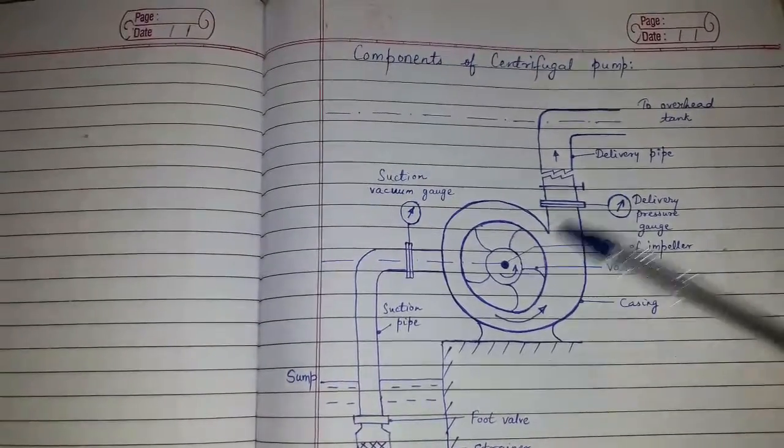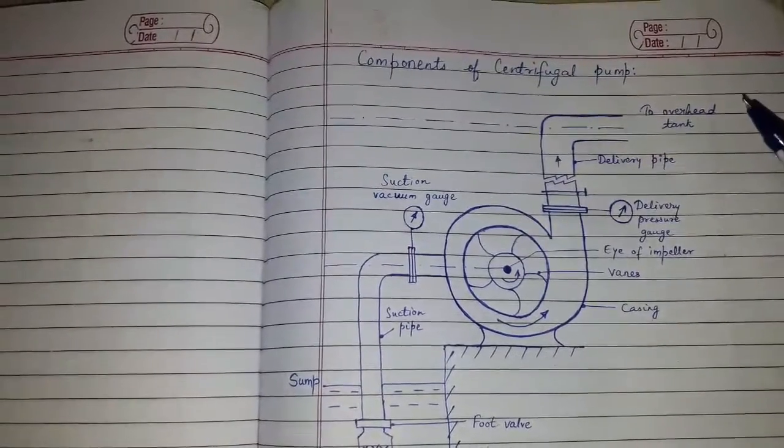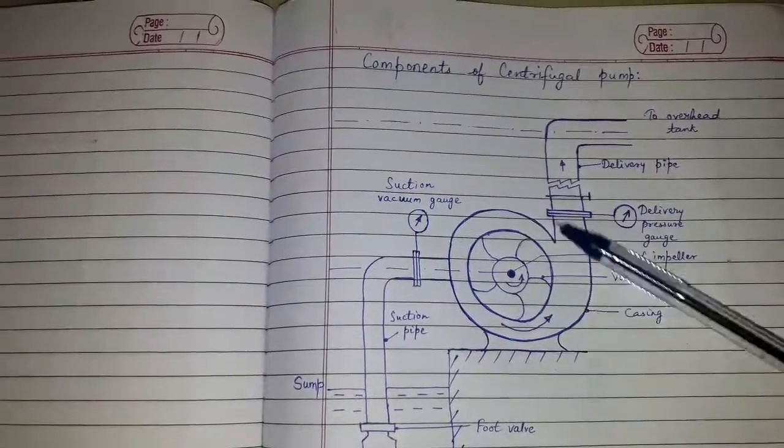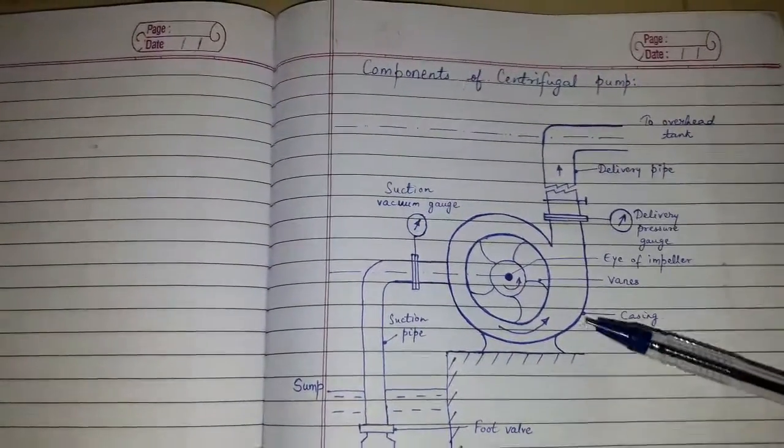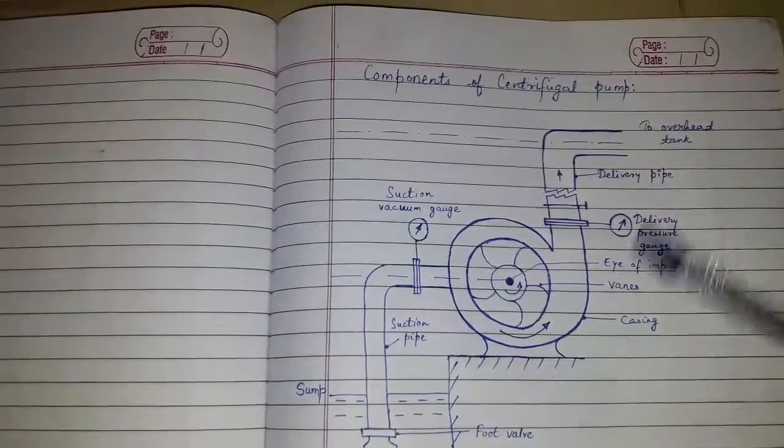Casing has two functions: to guide water from entry to exit, and to convert the kinetic energy into pressure energy.